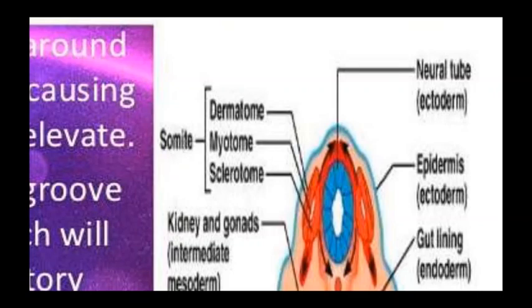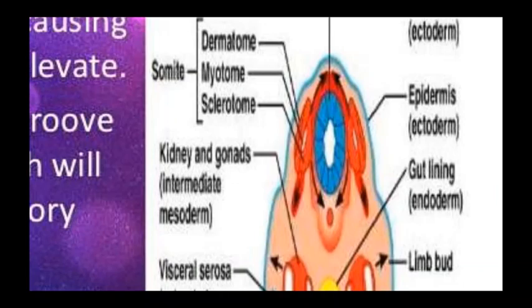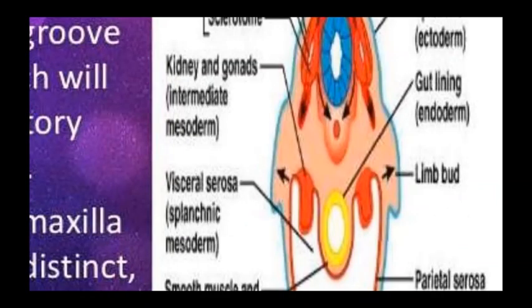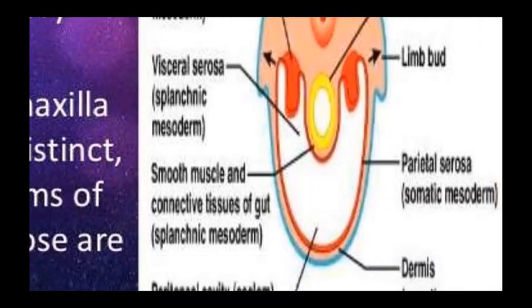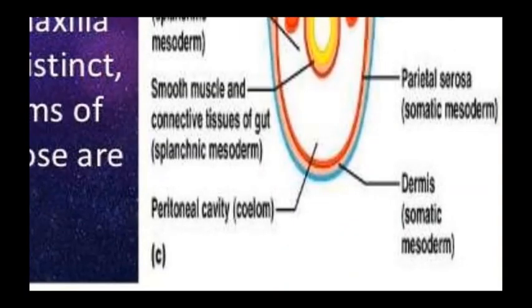The diagram shows ectoderm forming both the neural tube and epidermis. The somite is divided into three structures: dermatome, myotome, and sclerotome. Intermediate mesoderm forms the kidneys and gonads. Endoderm forms the gut lining. The splanchnic mesoderm forms smooth muscle cells and connective tissue of the gut, while somatic mesoderm forms the parietal serosa and dermis. The peritoneal cavity forms from the coelom.